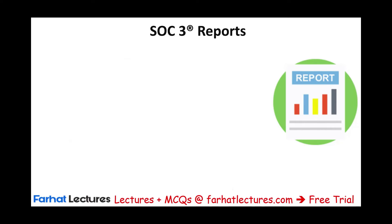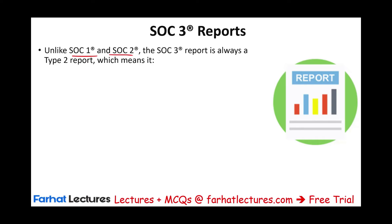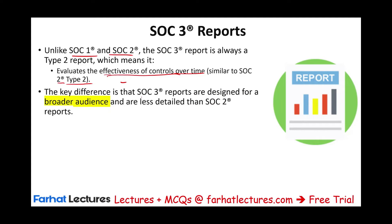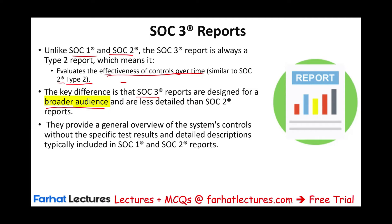SOC 3, unlike SOC 1 and SOC 2, is always a Type 2 report — there is no Type 1. It evaluates the effectiveness of controls over a period of time, similar to SOC 2 Type 2. When you have Type 2, you have everything in Type 1, but you don't issue a SOC 3 Type 1 — we simply don't have SOC 3 Type 1. The key difference is that SOC 3 reports are designed for a broader audience and are less detailed than SOC 2 reports, providing a general overview without specific test results or detailed descriptions.